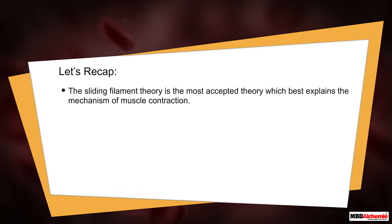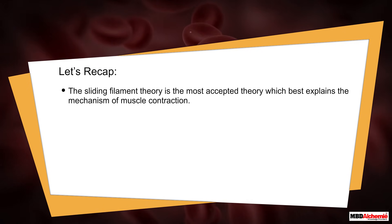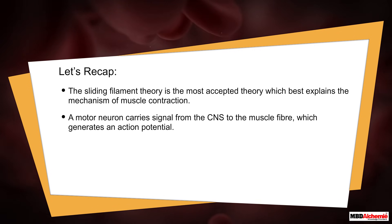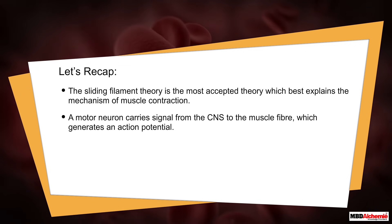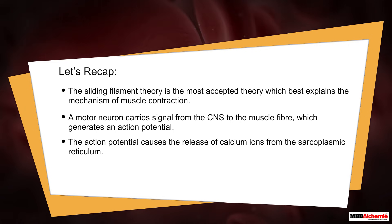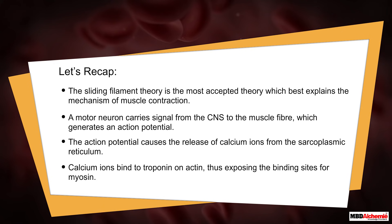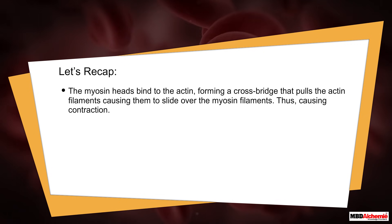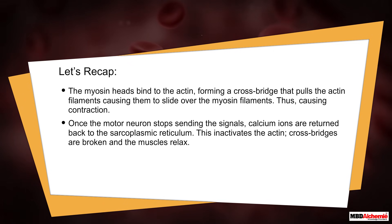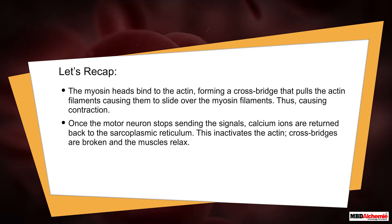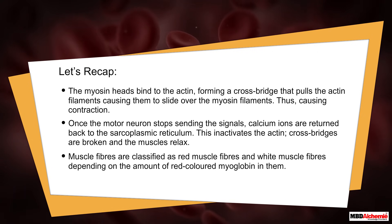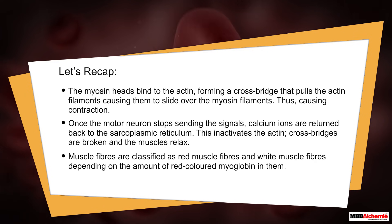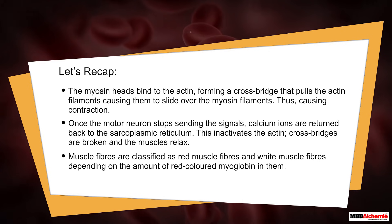To recap: the sliding filament theory best explains muscle contraction. A motor neuron carries a signal from the CNS to the muscle fiber, generating an action potential that causes calcium ion release from the sarcoplasmic reticulum. Calcium ions bind to troponin on actin, exposing myosin binding sites. Myosin heads form crossbridges that pull the actin filaments, causing contraction. When the signal stops, calcium ions return to the sarcoplasmic reticulum, crossbridges break, and the muscles relax. Muscle fibers are classified as red or white fibers based on their myoglobin content.